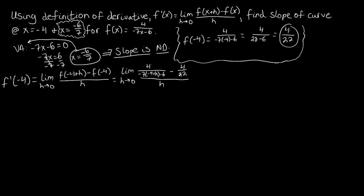We're dealing with a complex rational expression — fractions within a fraction. If we try to pass the limit directly, we replace h with 0, getting 4 over 22 minus 4 over 22, which is 0 over 0. So this limit is indeterminate at this point.